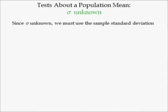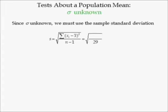Since the population standard deviation is unknown, we must use the sample standard deviation instead. The sample standard deviation is equal to the square root of the ratio of the sum of the square deviations from the mean and sample size n minus 1. Since n minus 1 equals 29 and the sum of the square deviations from the mean is 1.3132, the sample standard deviation is 0.2128.